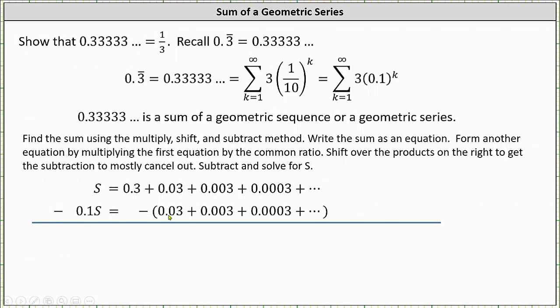So this lined up directly below the 0.03 in the first equation. The second product is 0.1 times 0.03, which is 0.003, and the pattern continues.